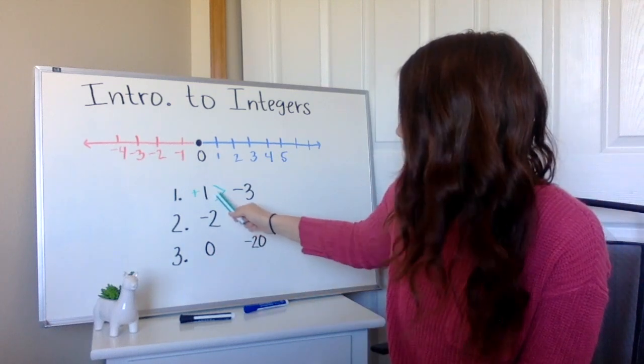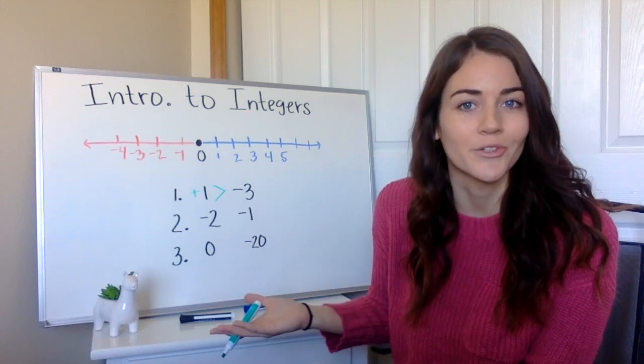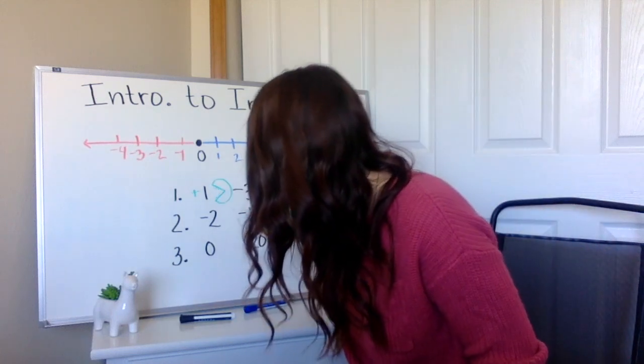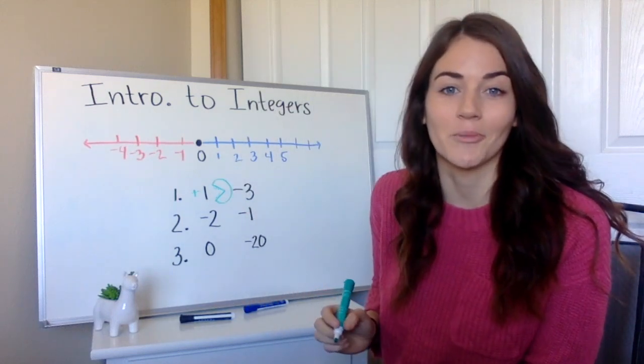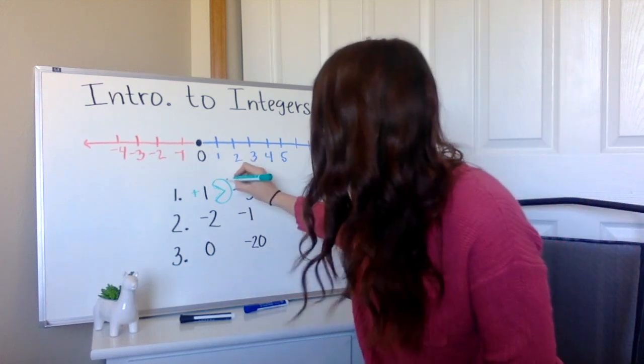And remember with those symbols, we have it open up to the larger number because Pac-Man wants to eat the most food. I have kind of an evil Pac-Man. He's got some teeth in there.